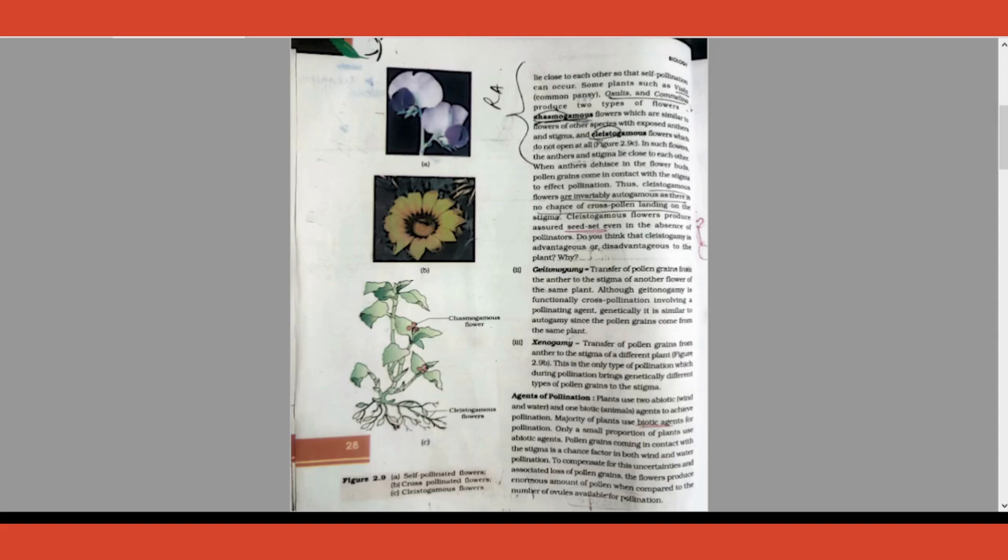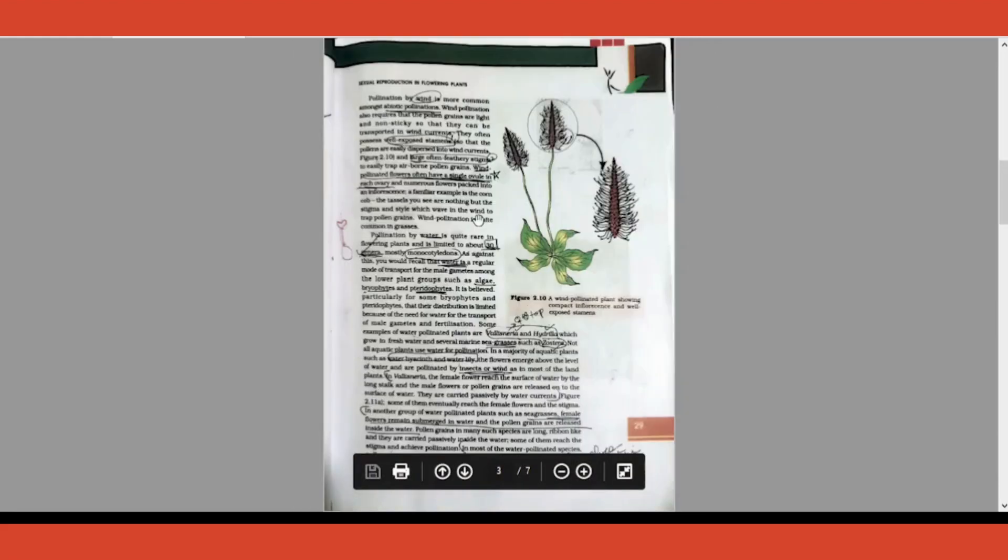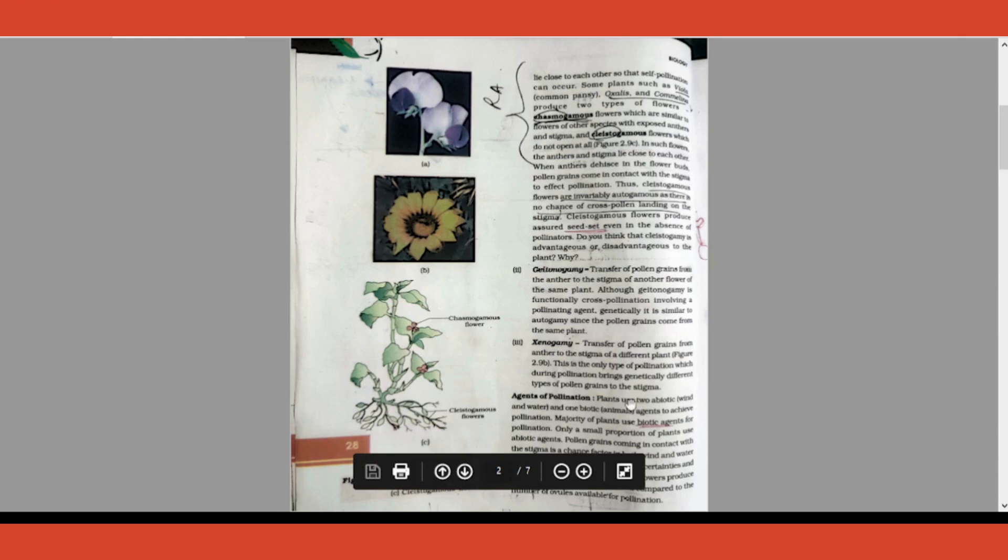Please remember all these statements because from here a lot of questions come. Coming to agents of pollination, I told you what is biotic and abiotic. Which is the most common one? You should know majority of the plants use biotic agents compared to abiotic agents. Please underline that statement.